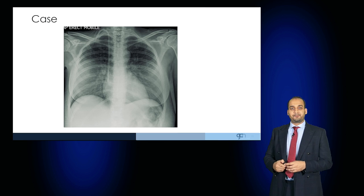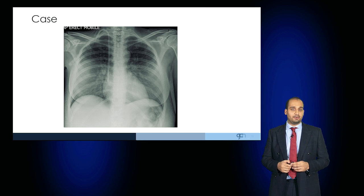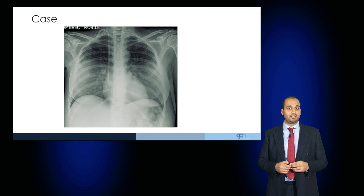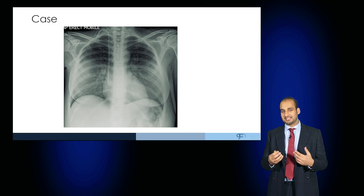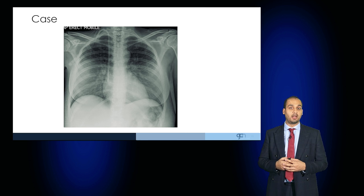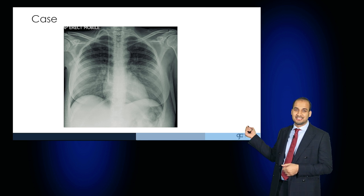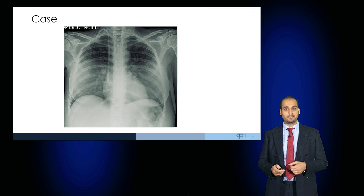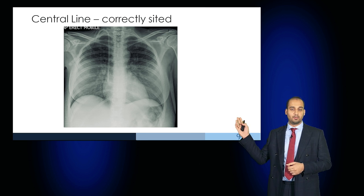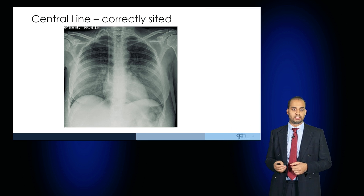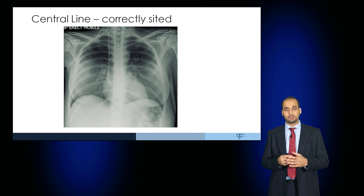Now have a look at this patient. This is an AP erect mobile film, which would suggest that the patient was relatively unwell. The key finding is the siting of a central line, and this is correctly sited where the tip is just superior to the right atrium.